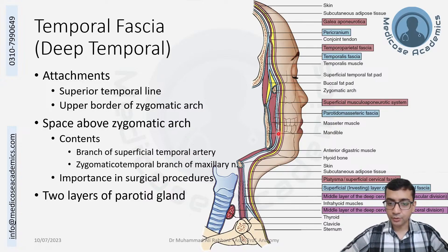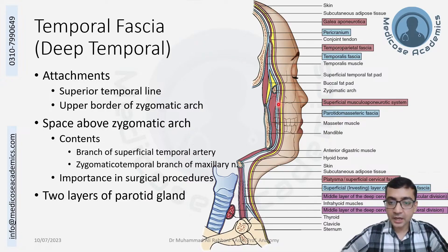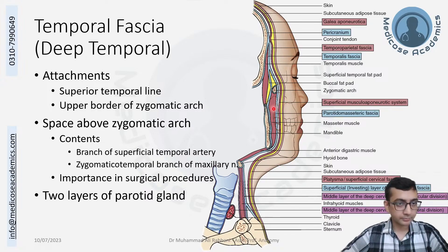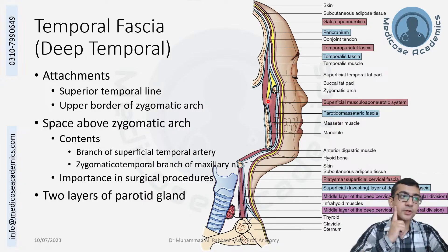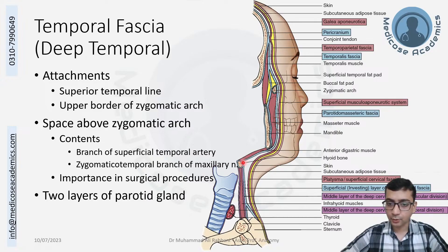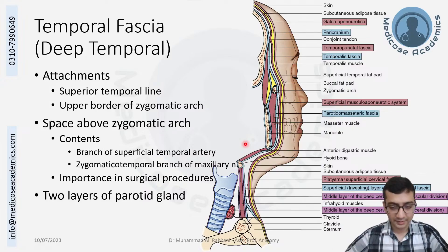These two split layers continue down to the inferior margin of the mandible, and in doing so they form the capsule of the parotid gland — an outer fascial layer and an inner fascial layer, both coming from the temporalis fascia. At this level the outer aspect changes its name to parotidomasseteric fascia, as it covers the parotid posteriorly and clearly covers the masseter muscle. These two layers join at the lower margin of the mandible, which is essentially the investing layer of deep cervical fascia.